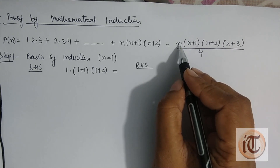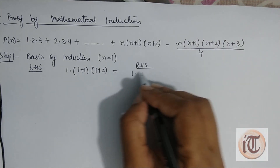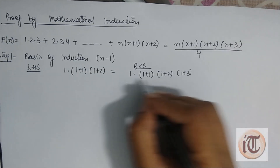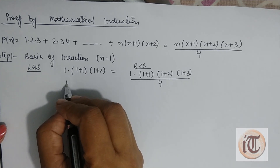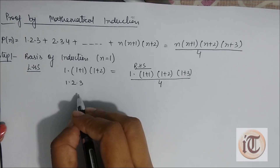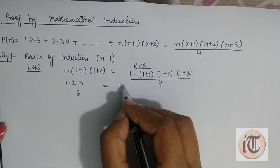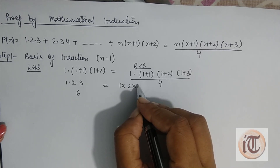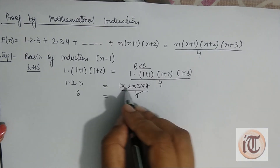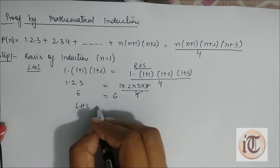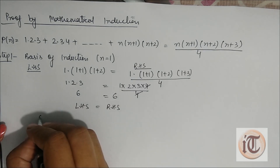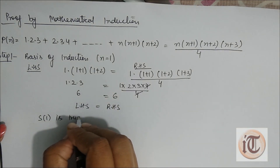In the right hand side also we place n=1, so it becomes 1·(1+1)·(1+2)·(1+3)/4, which is 1·2·3·4/4. The 4 cancels out, giving 6. So left hand side equals right hand side, therefore S(1) is true.